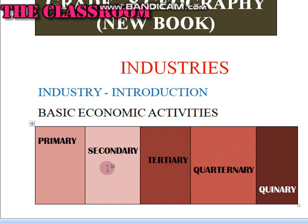Secondary activities are those that change raw materials into usable products through processing and manufacturing — for example, bakeries that make flour into bread. Tertiary economic activities are those that provide essential services and support to industries to function. Quaternary activities are associated with the creation and transfer of information, including research and training — for example, programs telecasted from television stations.